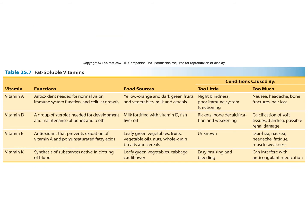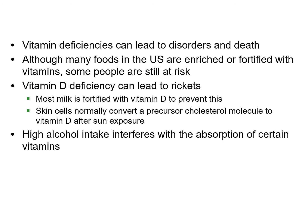The fat-soluble vitamins are A, D, E, and K. You find these in fruits, vegetables, milk, and oils. Deficiencies can cause issues like rickets and bone decalcification. Vitamin D is particularly important — if you have a lot of melanin and go out in the sun, your body can actually make vitamin D on its own, so you don't have to consume as much.